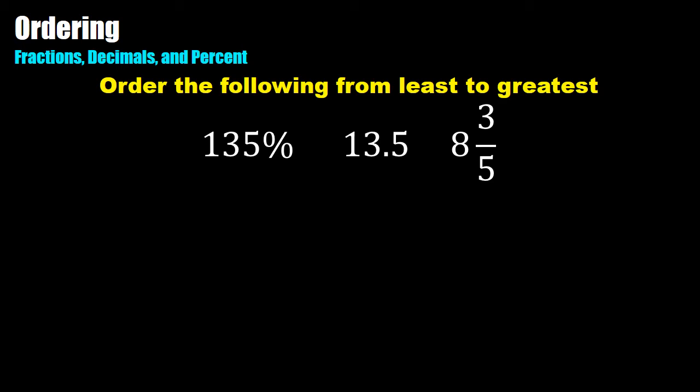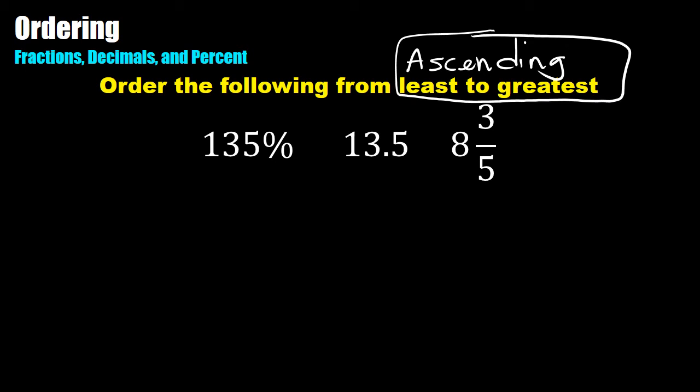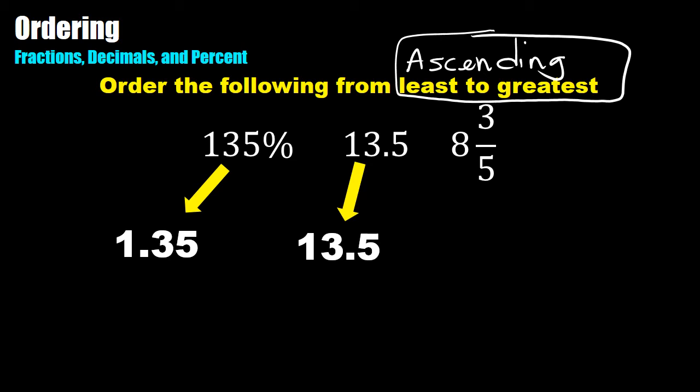In this example we're going to order these from least to greatest, which is the same as the word ascending — going smallest number to biggest number. To change these into a common format, the format I like best is decimal format; it's easier to compare the place values. You could choose any conversion you want. If you're stuck or confused on the formatting, check out pages 7 and 8 of your notes, or find the videos about conversions on YouTube.